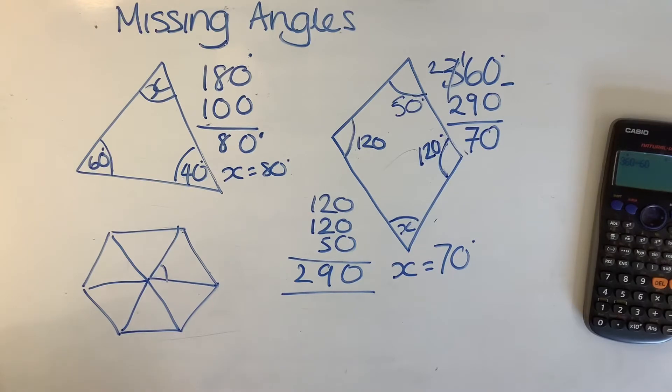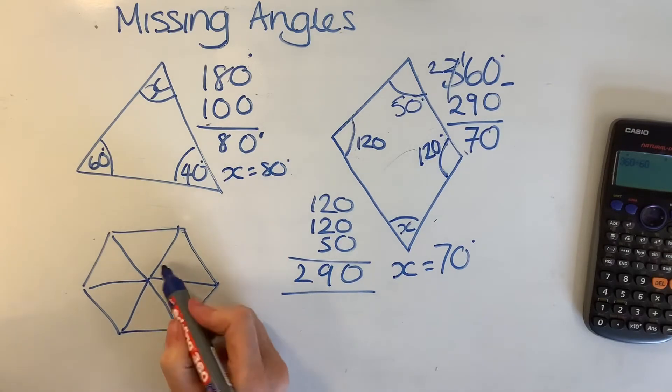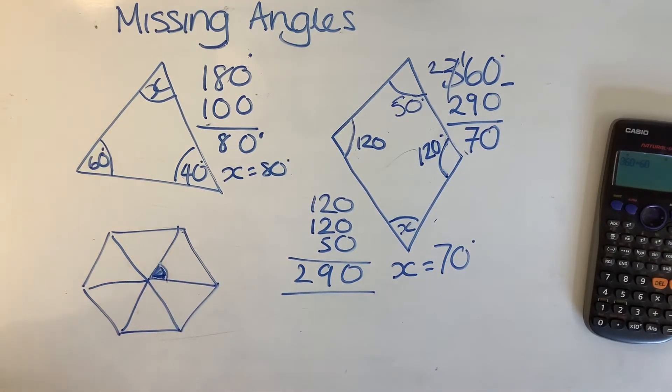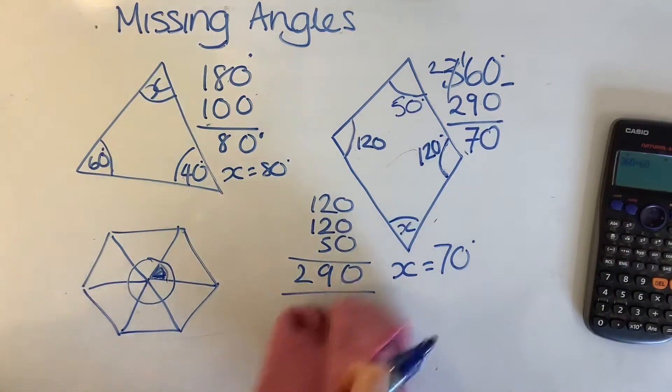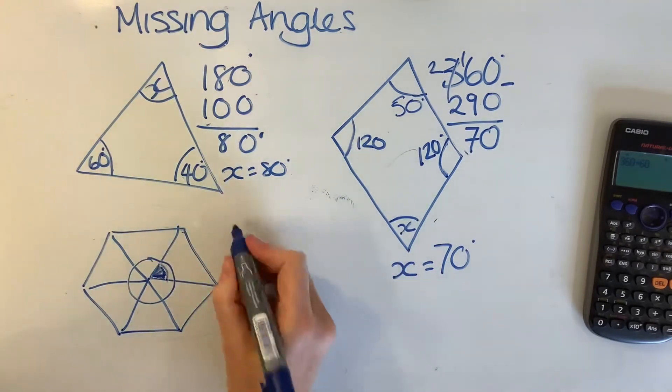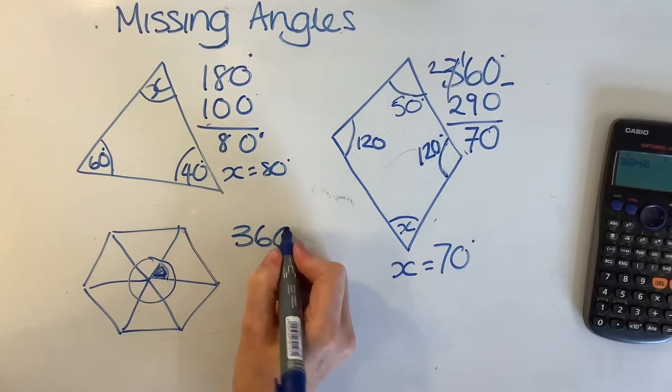Right then, next they get a little bit more complicated. So you might be given a shape like this and asked to find out the angle here. Nice and simple. But the fact that we need to know angles around a full circle, so all of these angles added up together are 360. 360 degrees.